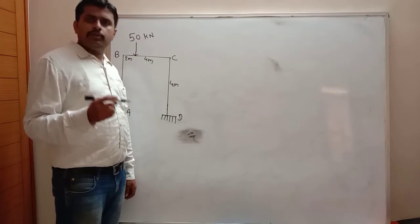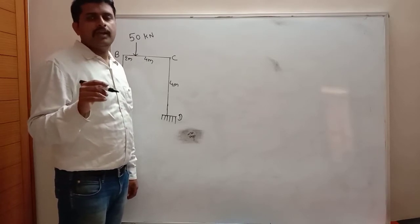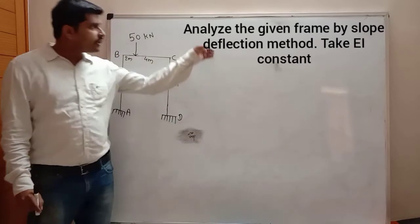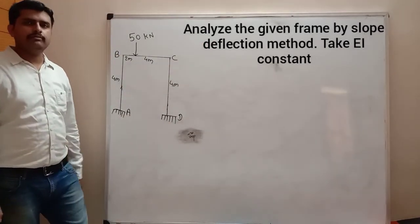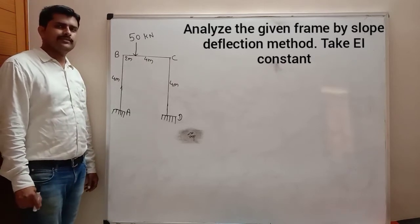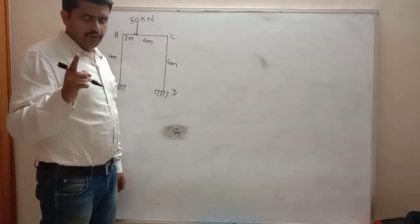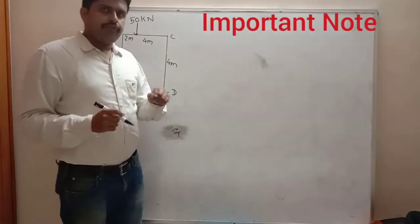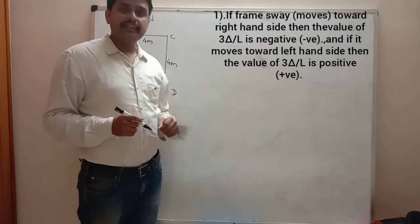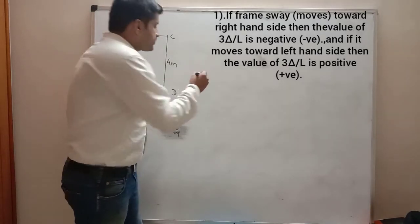Good morning everyone. Today we will solve our last topic on slope deflection method, that is analysis of sway frame by slope deflection method. Here is your question and the diagram — please note it down. We have to consider the effect of sway: if the frame moves towards the right hand side, then 3-delta upon L is considered as negative.